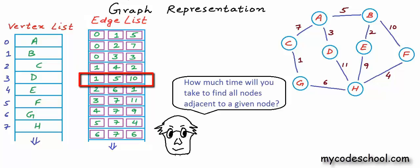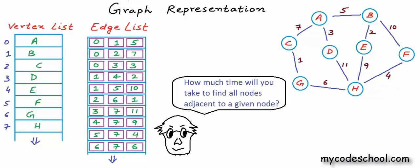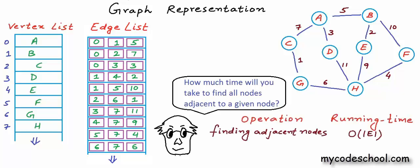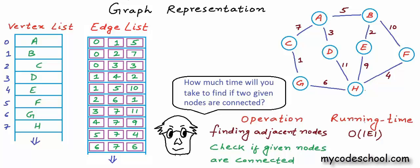We will have to scan the whole edge list — perform a linear search — going through all entries to see if the start or end node in the entry is our given node. For a directed graph, we check if the start node matches; for an undirected graph, we check both start and end. Running time is proportional to the number of edges, so time complexity is O(|E|). Another frequently performed operation is finding if two given nodes are connected. In this case too we perform a linear search on the edge list, and worst case we look at all entries — so time complexity is again O(|E|).